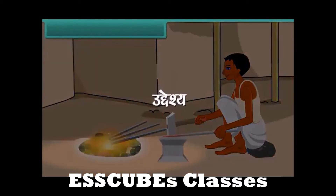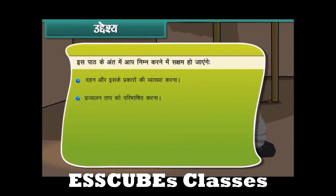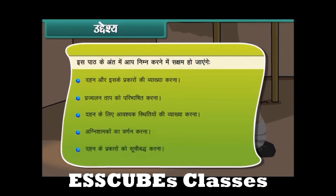उद्देश्य: इस पाठ के अंत में आप निम्न करने में सक्षम हो जाएंगे — दहन और इसके प्रकारों की व्याख्या करना; प्रज्वलन ताप को परिभाषित करना; दहन के लिए आवश्यक स्थितियों की व्याख्या करना; अग्निशामकों का वर्णन करना; तथा दहन के प्रकारों को सूचीबद्ध करना।